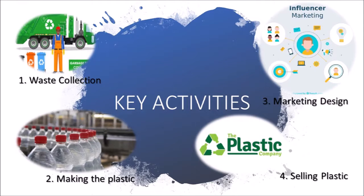We have four main activities for producing bioplastic. First is waste collection, whereby all the waste will be collected and separated according to type. This is followed by the process of making the plastic, which is produced under experiment with chemicals. The third activity is working on marketing design. After the plastic is produced, the marketing team designs the way they are going to sell the bioplastic to any company that uses our product as raw material.